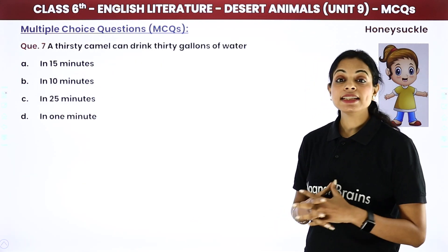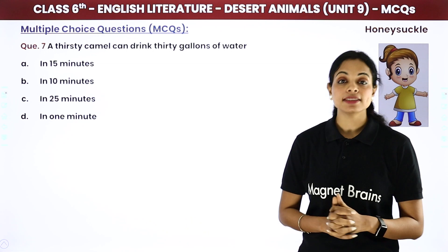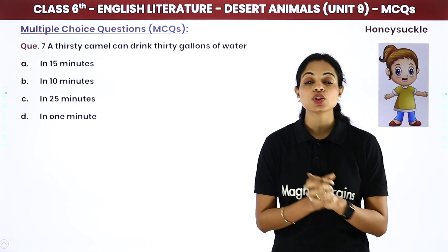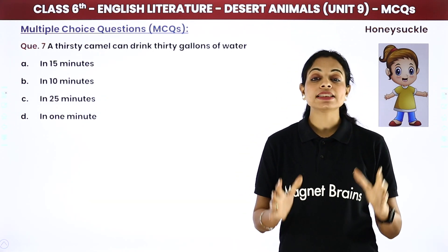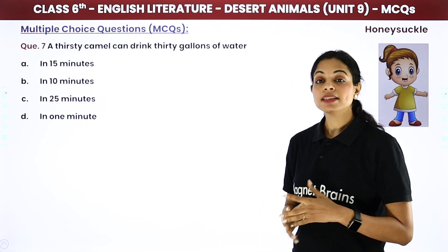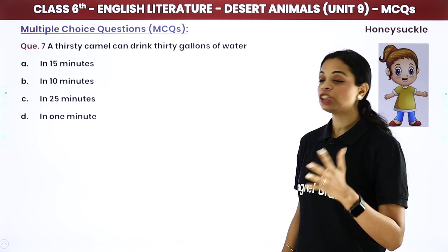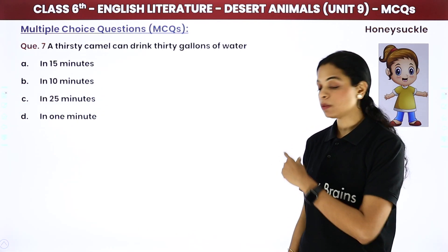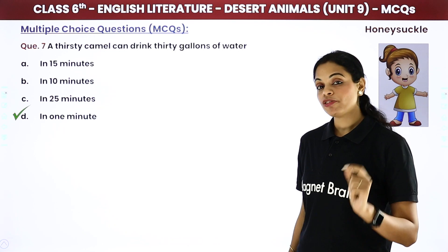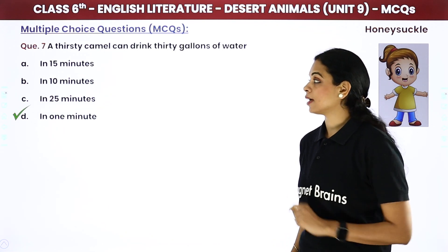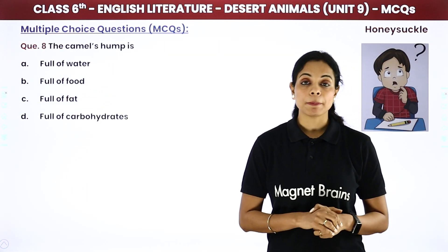A thirsty camel can drink 30 gallons of water — एक thirsty camel 30 gallon पानी पी सकता है, कितनी देर में? Options: 15 minutes, 10 minutes, 25 minutes, or 1 minute. The answer is: 15 minutes.